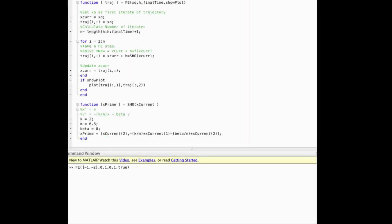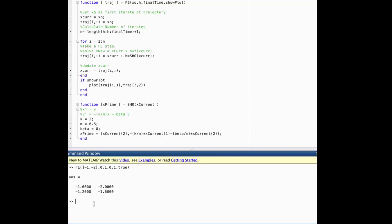It's always a good idea when you write new software to desk check the software. That means to do the first iteration by hand and make sure that what you got by hand is what you get through the software. We use forward Euler to solve the simple harmonic oscillator for one time step using a time step of 0.1, starting at negative 1, negative 2. And if we do that, we see that we get negative 1.2 and negative 1.6, which is precisely what we got during the desk check. So I would say that our software is good to go.